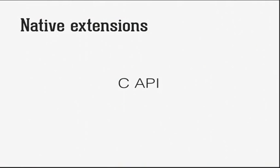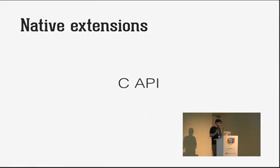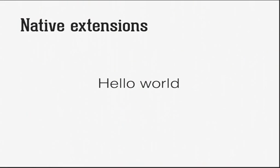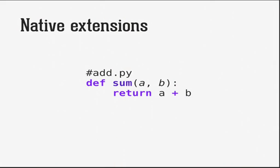Let's start with the three mechanisms. First, native extensions. CPython gives us access to the C API, which defines a set of functions, macros, and variables that provide access to most aspects of the Python runtime, so we can extend how Python works using C code. For a hello world, I've created a simple module with a function that takes two arguments A and B and returns their addition. You can imagine a more computationally intensive function here that we'd want to translate into C.